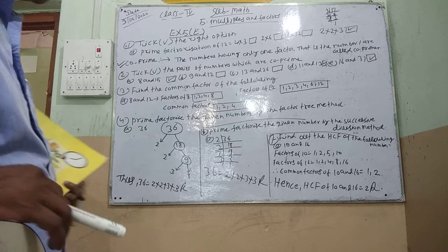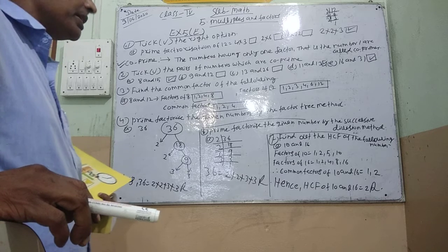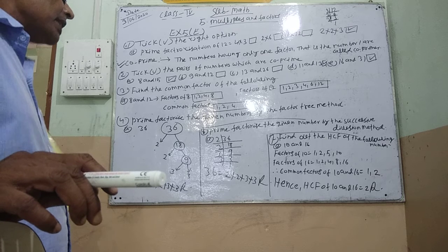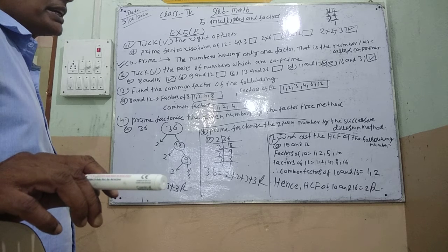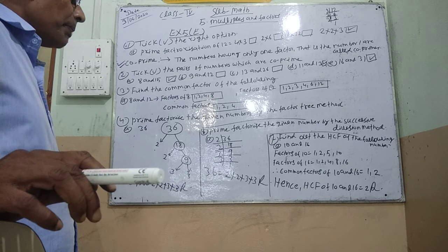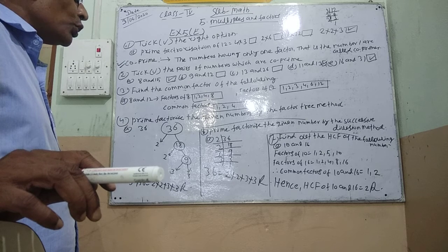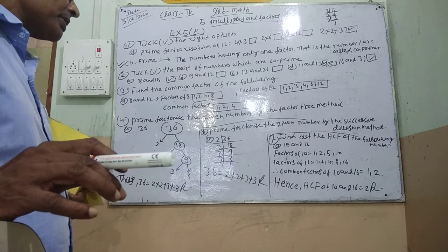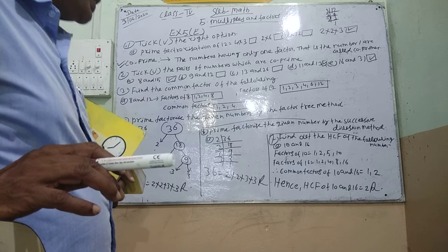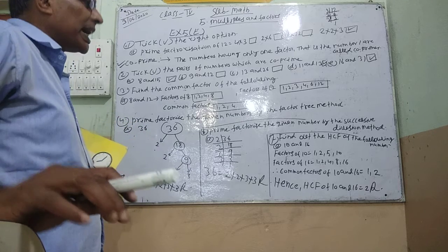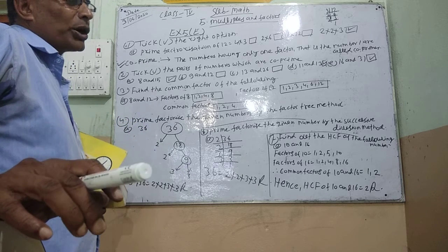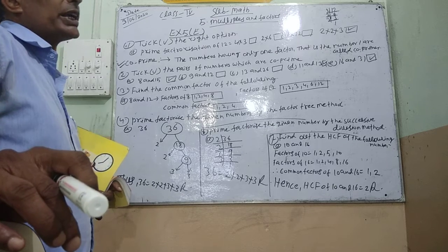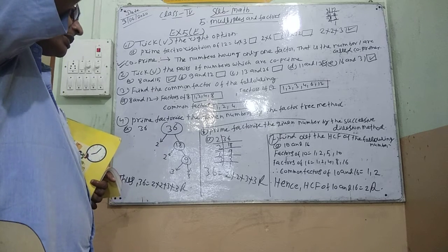Now question 7, find out the common factors of 10 and 16. Factor of 10 is 1, 2, 5, 10. Factor of 16 is 1, 2, 4, 8, 16. Common factors of 10 and 16 are 1 and 2.